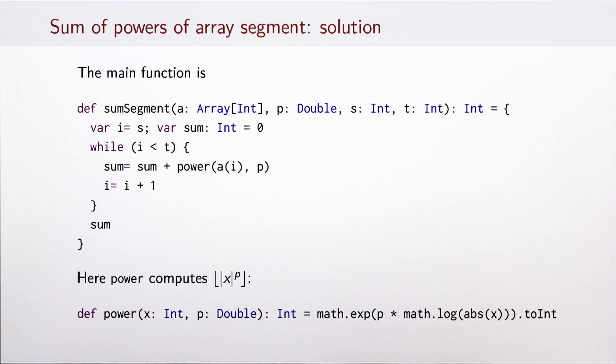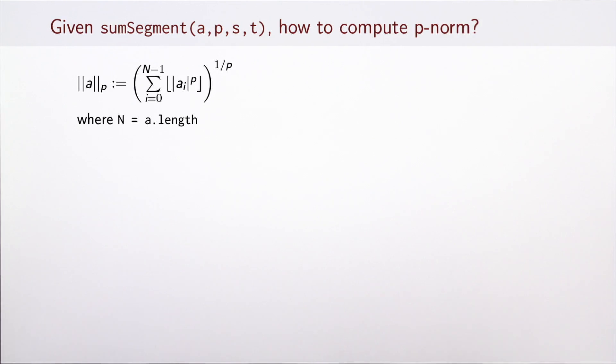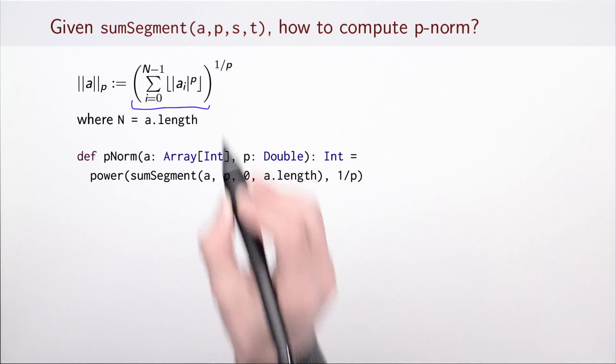Here's the simple version. We simply use a while loop to traverse all elements of the array. Then we raise the elements to the power p and accumulate the result in this variable sum. The sum is an integer, so we will be rounding the powers to an integer value. The implementation of power just uses a couple of math library functions. If we have a sum of p-powers of array elements, how would we compute the p-norm? We can just invoke the sum-segment function, give it the entire segment from 0 to the length of the array. Then we raise the result to the power 1 over p. This is the simple sequential version of this function.